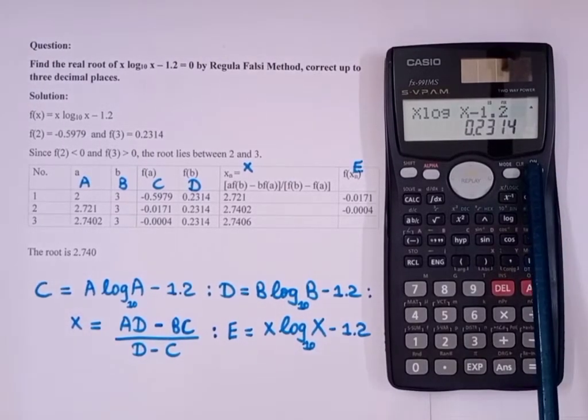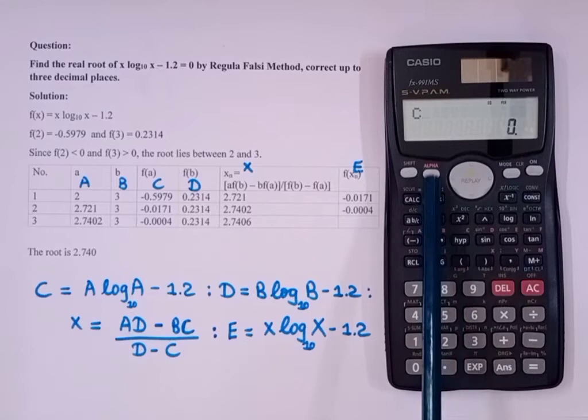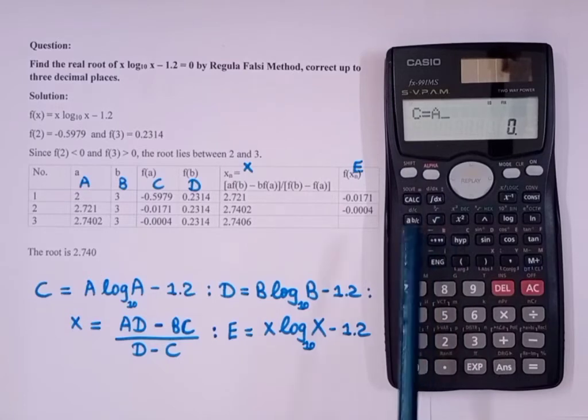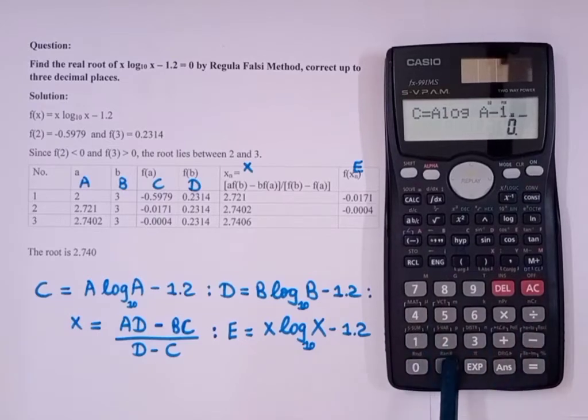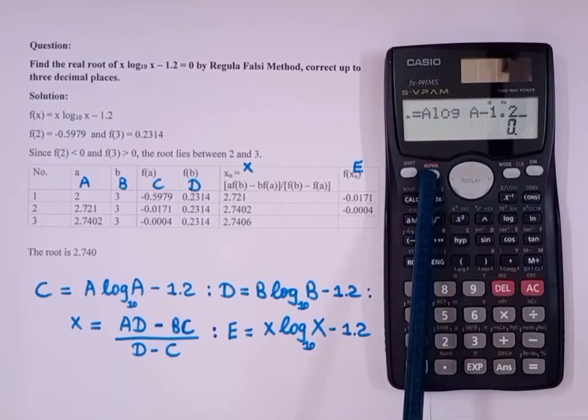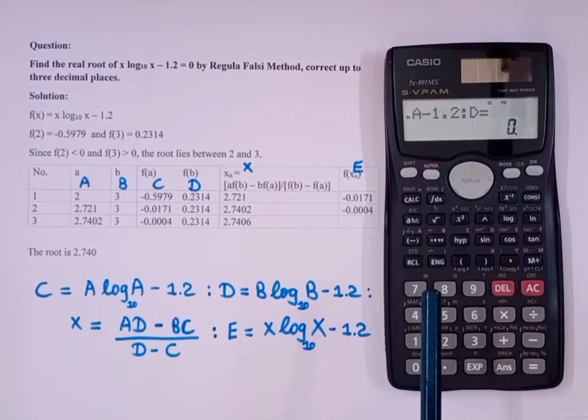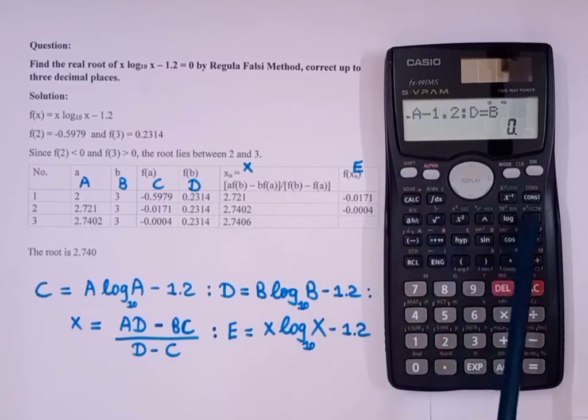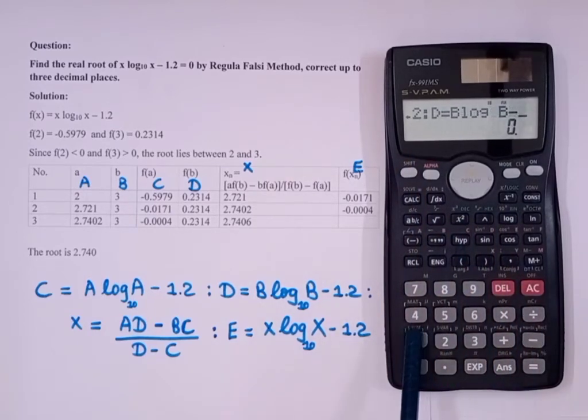Our next step is to write this in the calculator. For that, just press the on button. Then press alpha C alpha equals alpha A log alpha A minus 1.2. Then press alpha D alpha equals alpha B log alpha B minus 1.2.